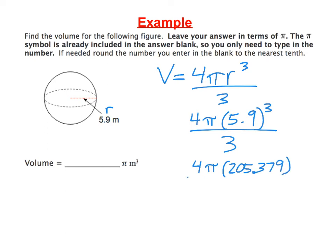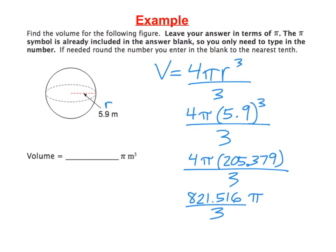And then I'm going to take that times 4, which is 821.516. The pi symbol is there and the whole thing is divided by 3. Now, divide by 3. So I'm taking 821.516, divide by 3 in my calculator.